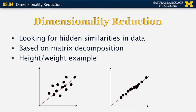Let's now consider dimensionality reduction in more detail. The purpose of this method is to look for hidden similarities in data. It's based on matrix decomposition. I'm going to introduce it by giving an example from a high school where people measure the heights and weights of students. The scatter plot on the left shows the different students who were measured — the x-axis represents height and the y-axis represents weight. We can find the regression line that explains this data best, shown in the middle with a red line appearing diagonally. It turns out that there is a third variable — in addition to height and weight — that can explain the differences between students, and that is exactly what the regression line shows you.